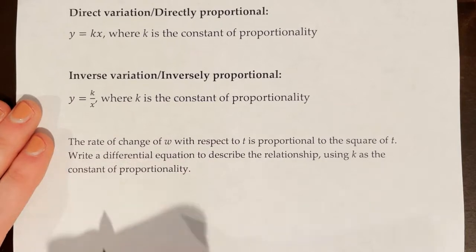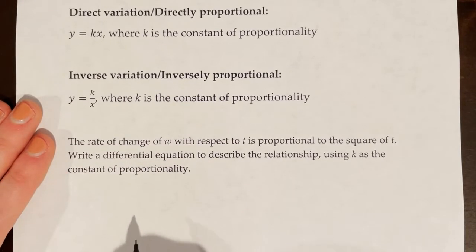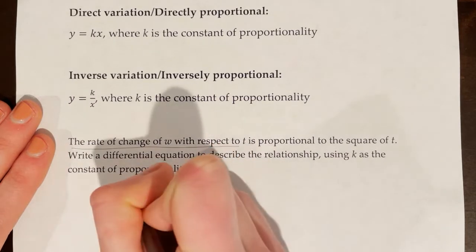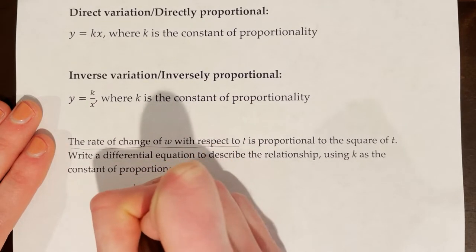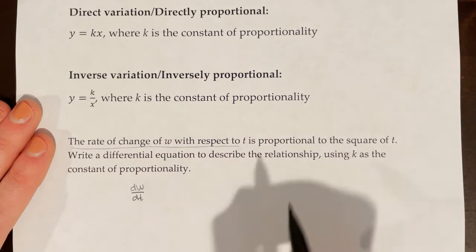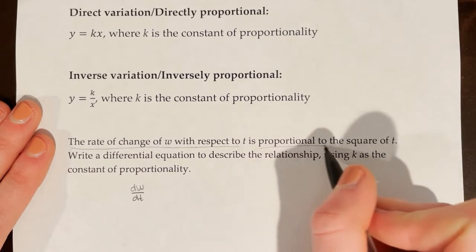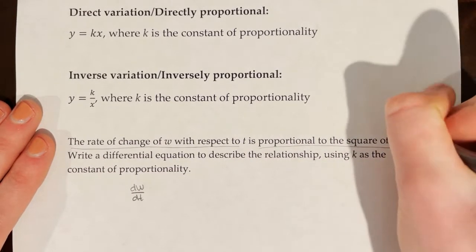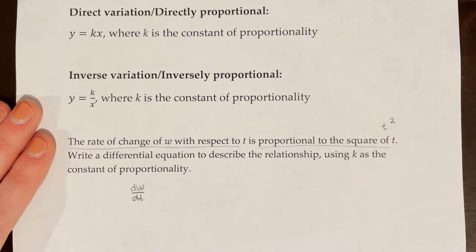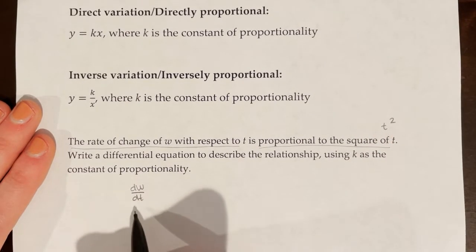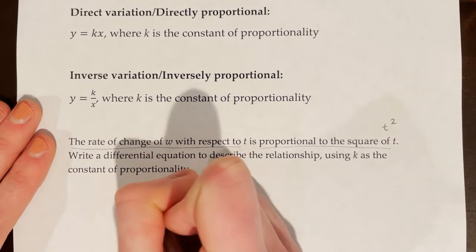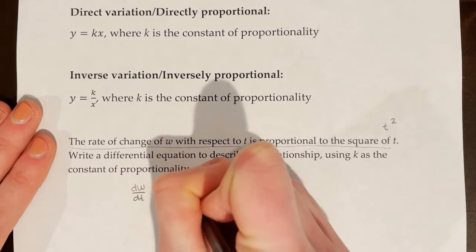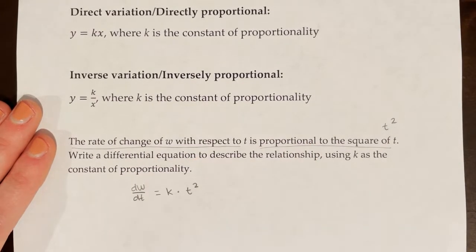The first thing we need to know is that a derivative is really just a rate of change. So when it says the rate of change of w with respect to t, that means that we need to write dw/dt. So dw/dt is proportional to the square of t. The square of t — that is not the square root of t — the square of t means t squared. So dw/dt is equal to k times t squared.